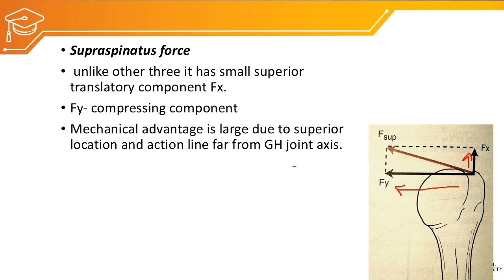As the supraspinatus comes from the supraspinatus fossa and gets inserted to the greater tubercle, when the muscle contracts it pulls the humeral head towards the glenoid fossa as well as creates rotatory movement of the humeral head. So supraspinatus is an important muscle for creating abduction of the glenohumeral joint as well as stabilization of the glenohumeral joint, as it creates a large rotatory and compressive force — Fy.